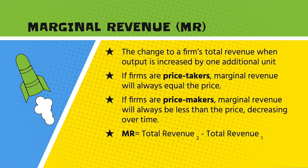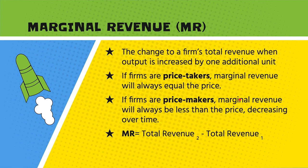Marginal revenue is the total revenue of a certain level of output minus the total revenue of the previous level of output. If firms are price takers — meaning they cannot set the price and it is predetermined by the marketplace — this only occurs in perfectly competitive markets, and their marginal revenue is always equal to the price. If firms have some market power, they are price makers, and the marginal revenue will always be less than the price and will always decrease over time.